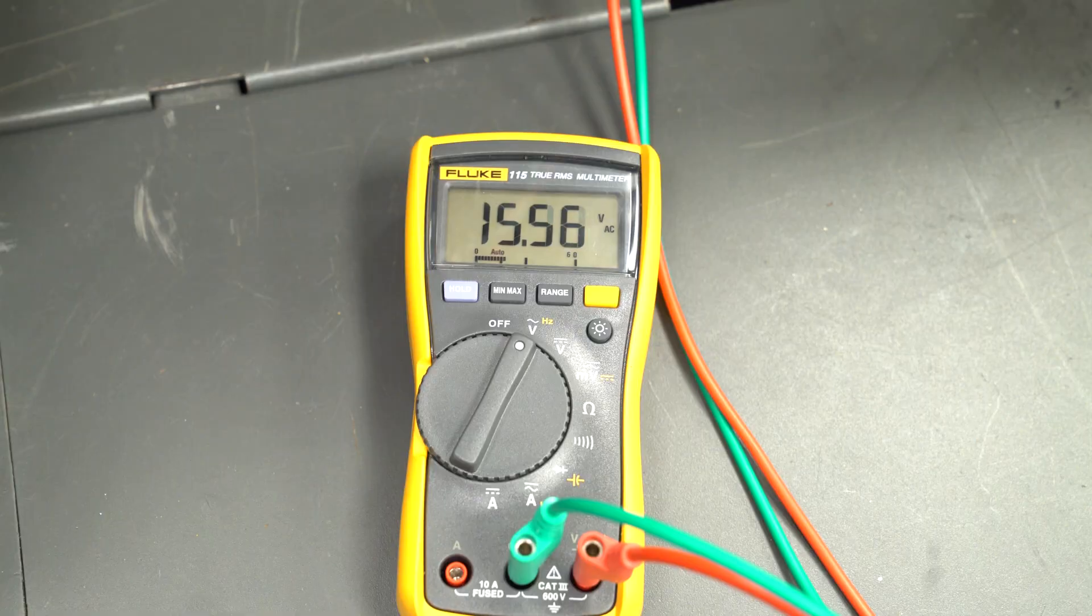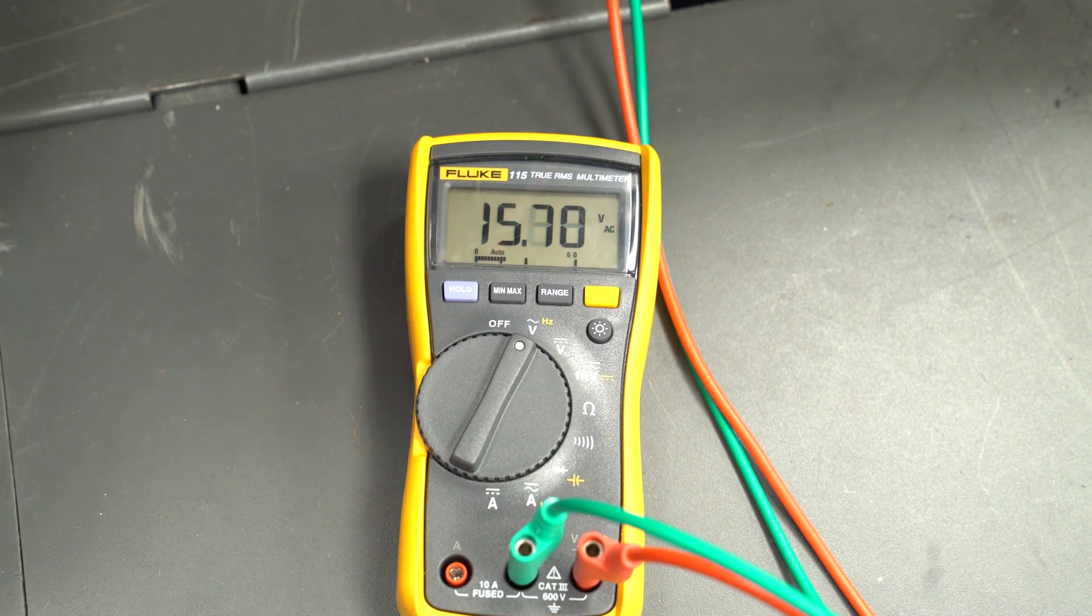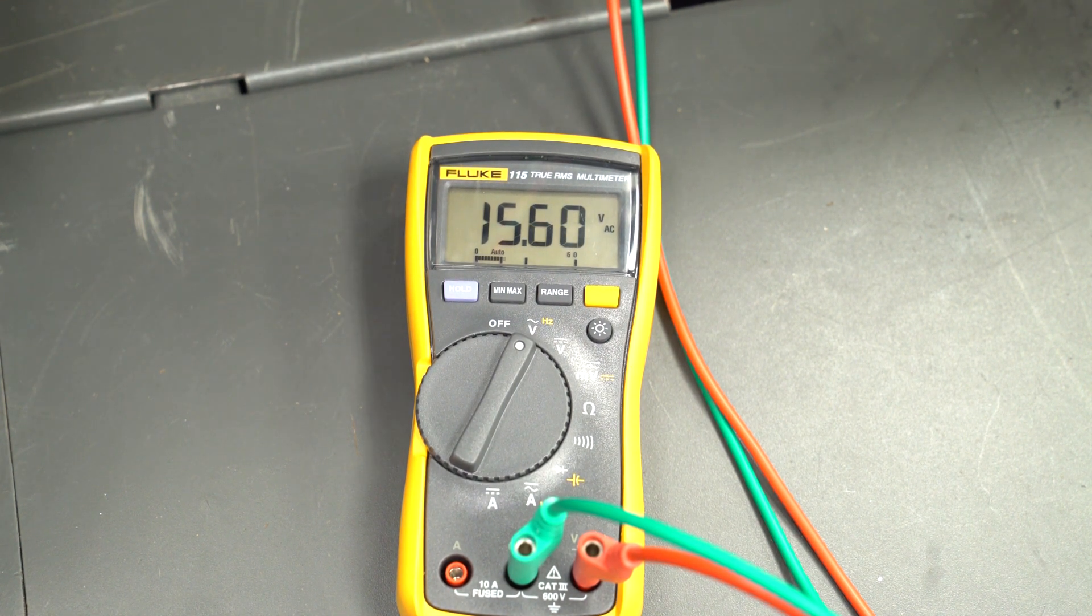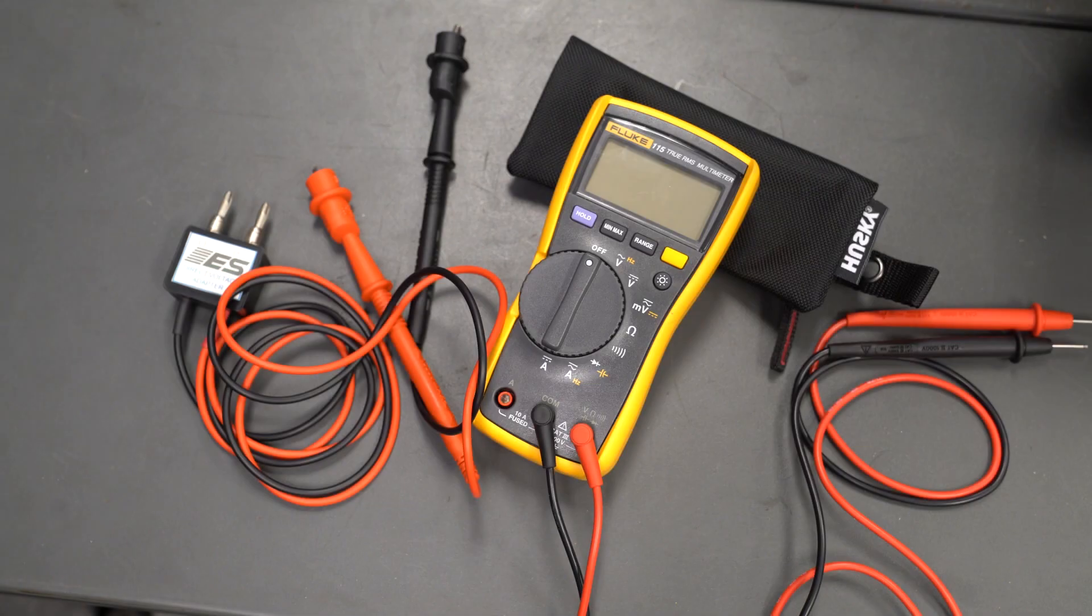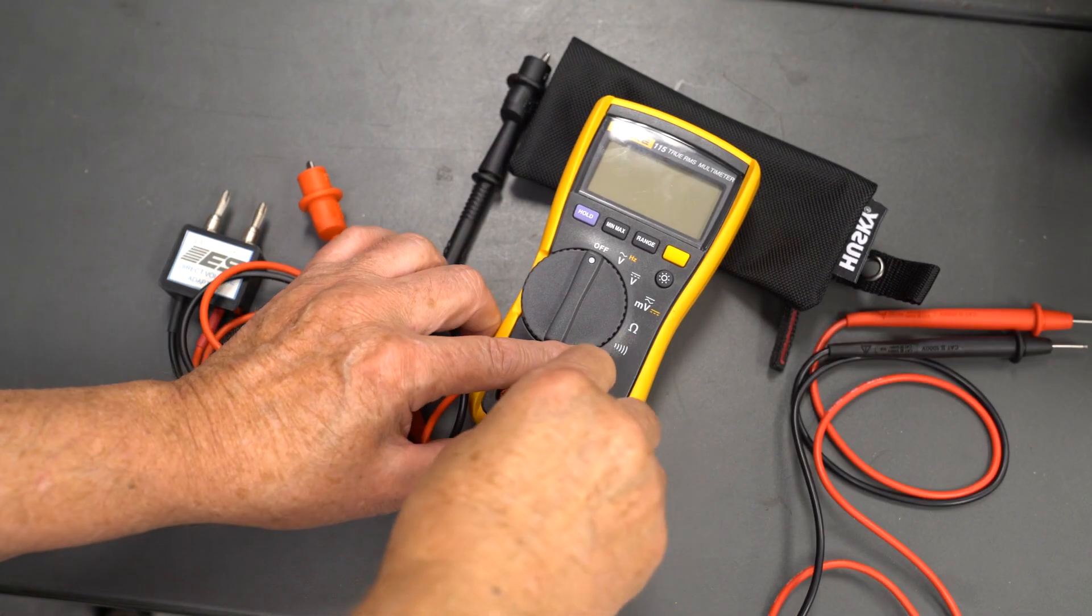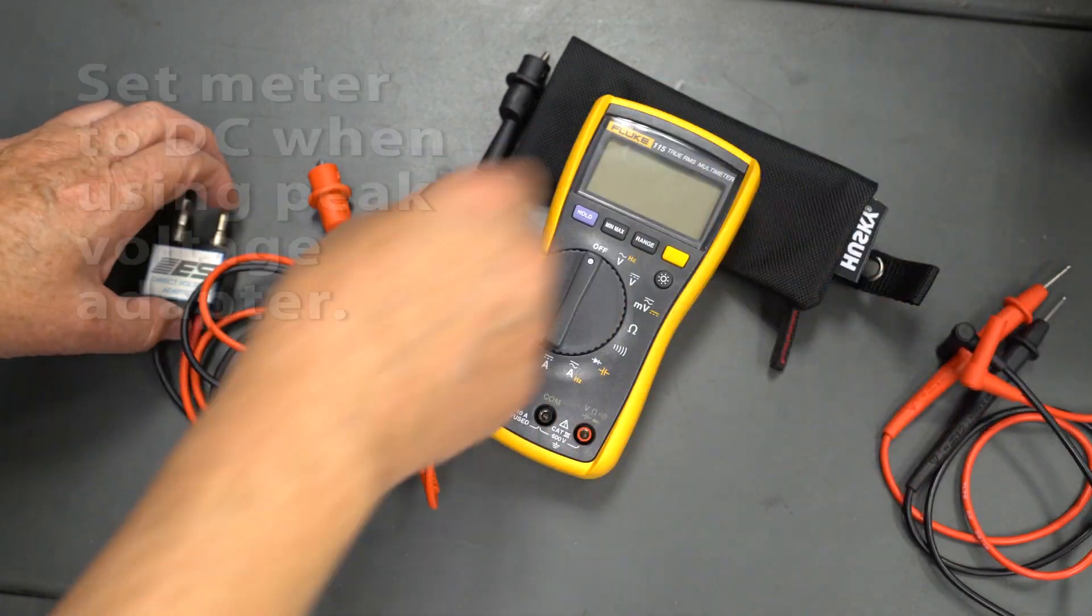You'll see some voltage with a standard voltmeter set to AC, but it will be lower than the actual output because the peaks are so short in duration, so a standard voltmeter really won't work. It must be a peak reading voltmeter or a peak reading adapter for your voltmeter.